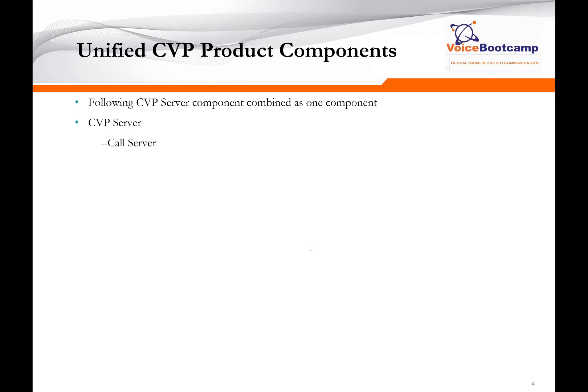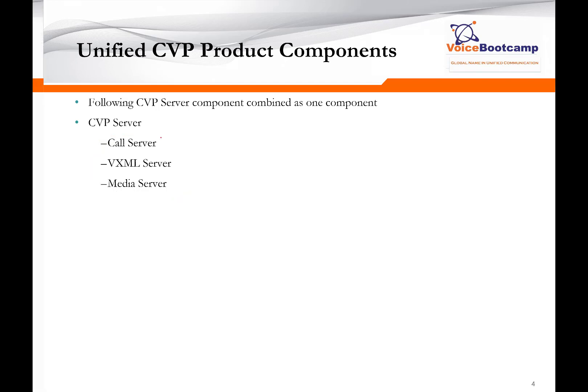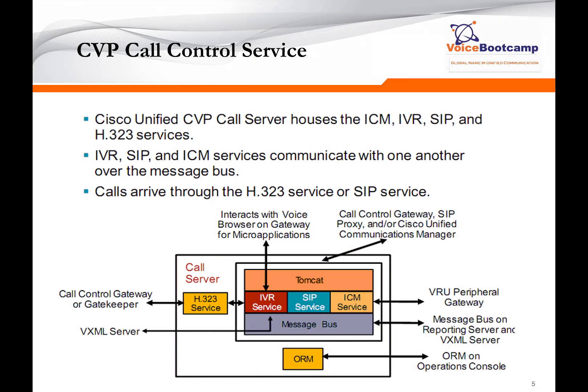CVP server consists of three combined servers that work together: call server, VXML server, and media server. Out of the six core components, these three are known as the CVP server. The CVP call control service, often known as the call server, can support ICM, IVR, and SIP services.